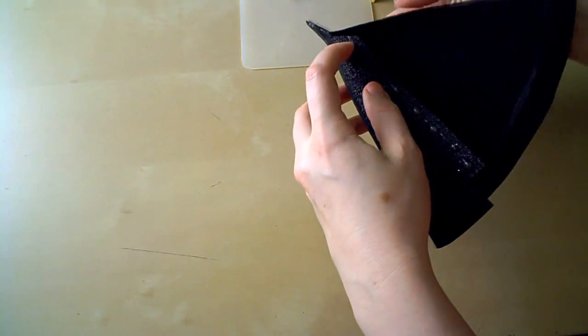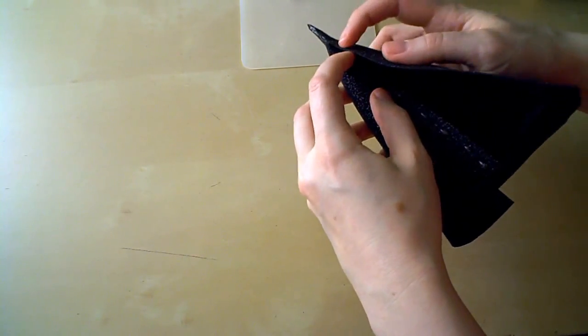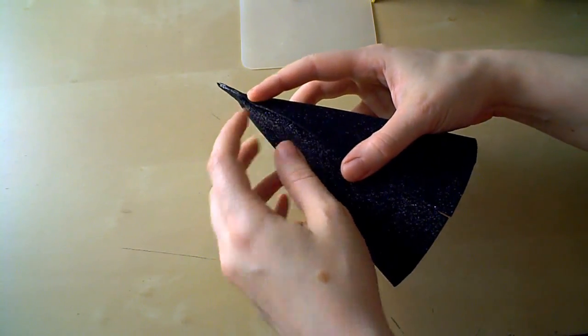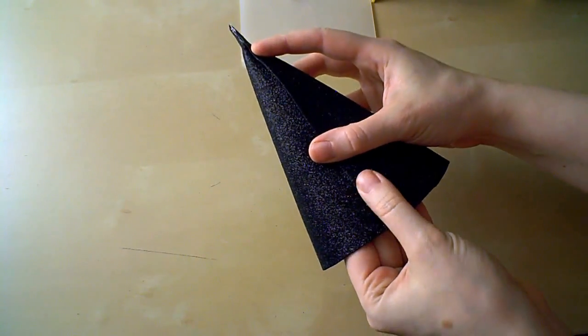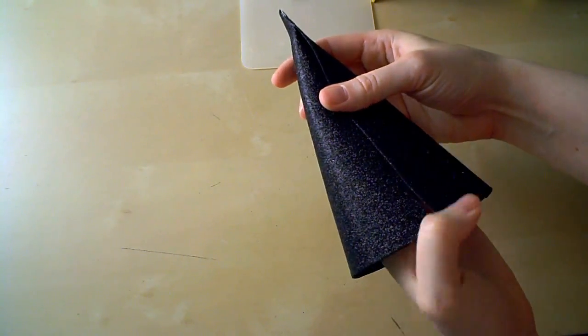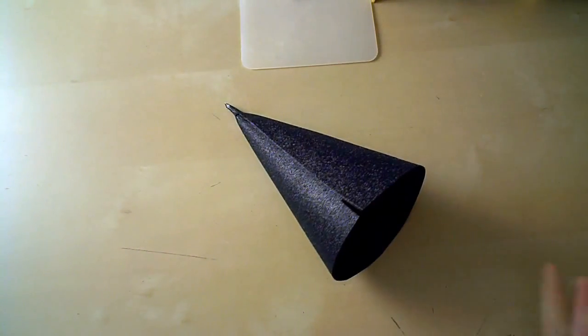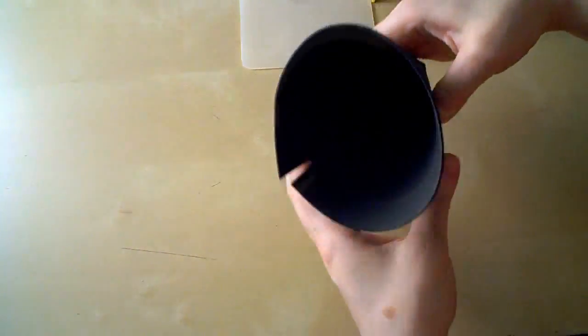And then we'll just fold it around into the cone shape, tucking the flap underneath and making sure everything is lined up how we want it before we press the edges together. Again, hold it in place for a good 30 seconds to a minute to make sure the glue has set. The result is a pretty perfect cone if I do say so myself.